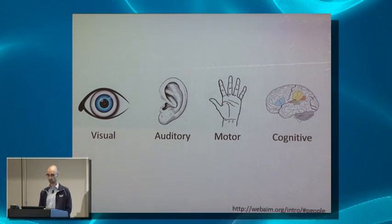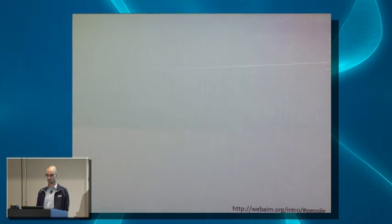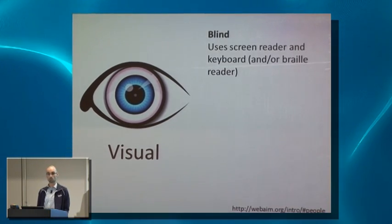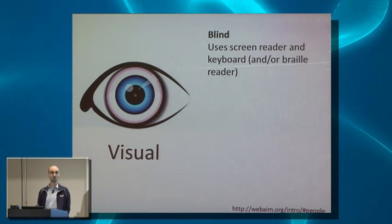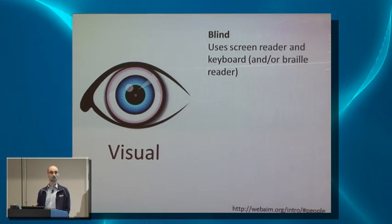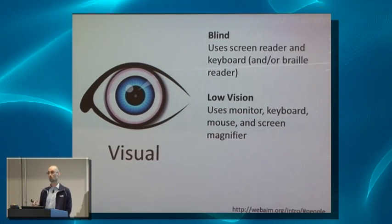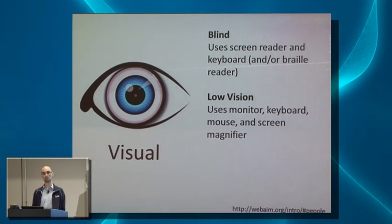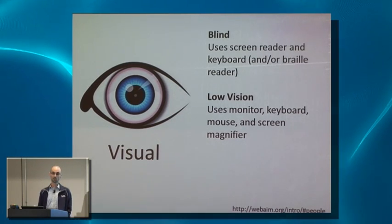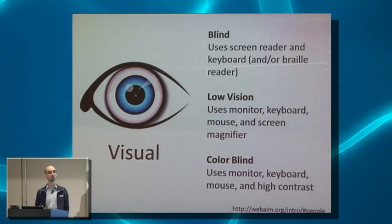All these people are using computers, but they might not be able to use your website. For visual issues, there are blind people who use screen readers and sometimes Braille readers — no monitor, no mouse needed. There are also people with low vision who use screen magnifiers to make things bigger, which means they see less of the screen at once.